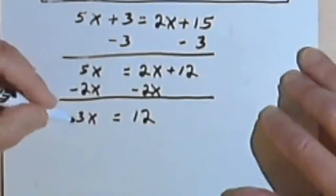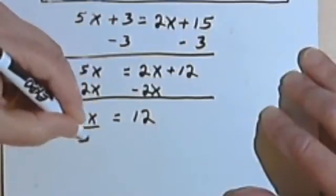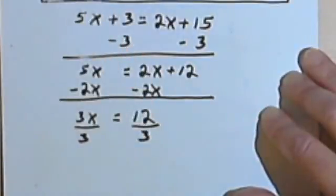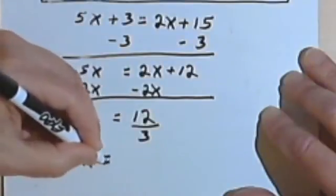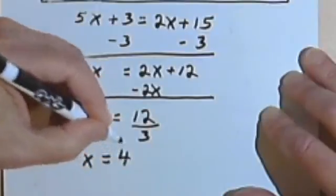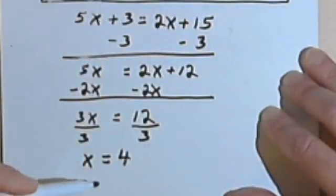And then this is pretty simple. All I have to do is divide by 3 on both sides. The left side is going to give me just the x. 12 divided by 3 will give me 4. So my answer should be x equals 4.